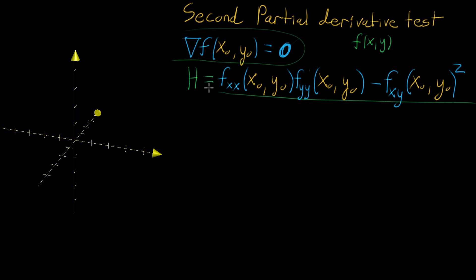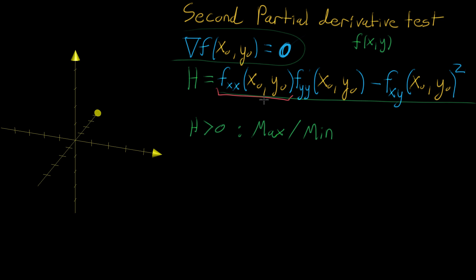If that value H is greater than zero, it tells you that you definitely have either a maximum or a minimum. To determine which one, you just look at the concavity in one direction — for example, the second partial derivative with respect to x. If that's positive, there's positive concavity in the x direction, meaning a local minimum. If it's negative, it means a local maximum.